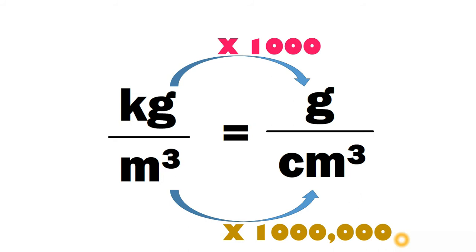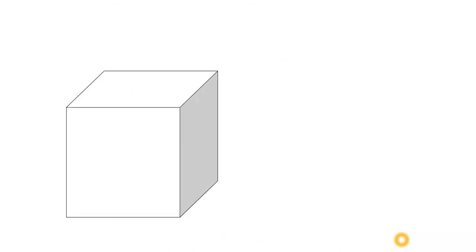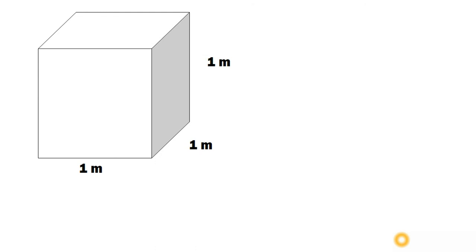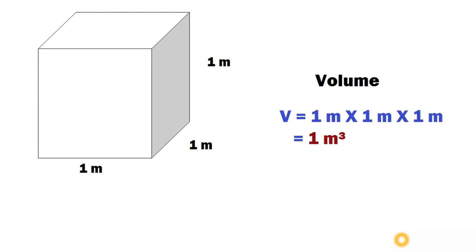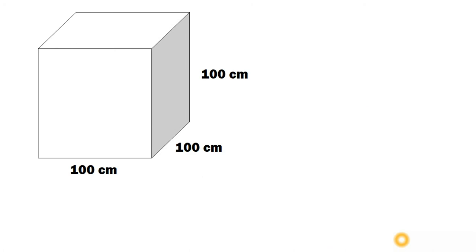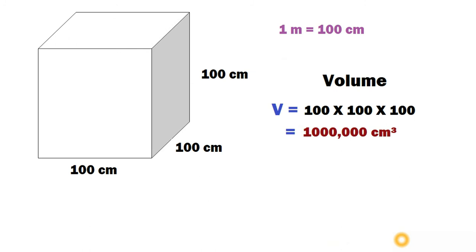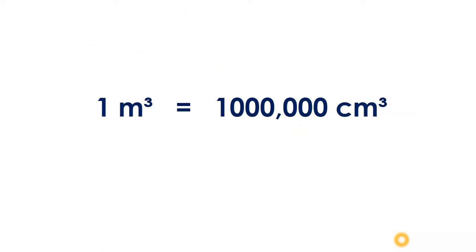Why is it ten lakh and not one hundred? We know that one meter is equal to one hundred centimeters, so let's check it out with an example. We have a cube with sides of one meter, so the volume is one into one into one, that is one meter cube. When we take the volume of the same cube in centimeters, the sides are one hundred centimeters each, and the volume is one hundred into one hundred into one hundred, which equals ten lakh centimeter cube. Therefore, one meter cube is equal to ten lakh centimeter cube.